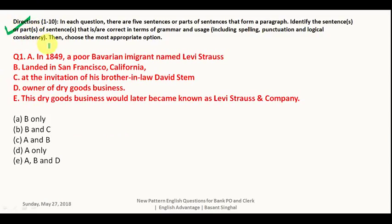In order to solve all these questions, first go through the directions properly in the examination hall as well as while solving test series. Let us solve the first question. This is sentence A, this is B, this is C, this is D, and this is E. In 1849, a poor Bavarian immigrant named Levi Strauss — now in this particular sentence the spelling of 'immigrant' is wrong, so this part is wrong.